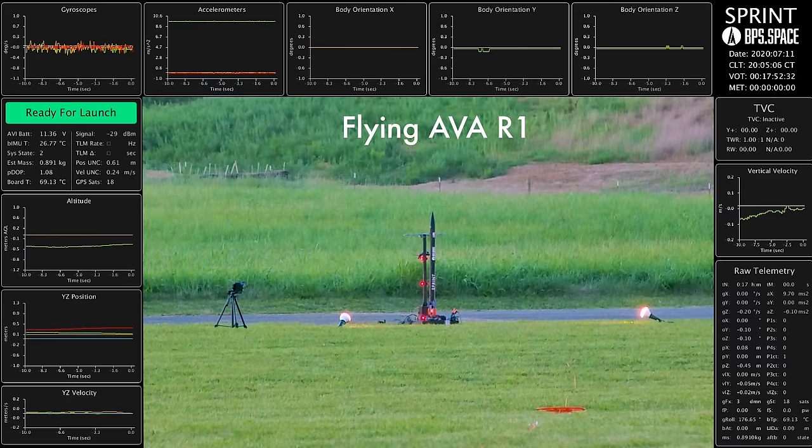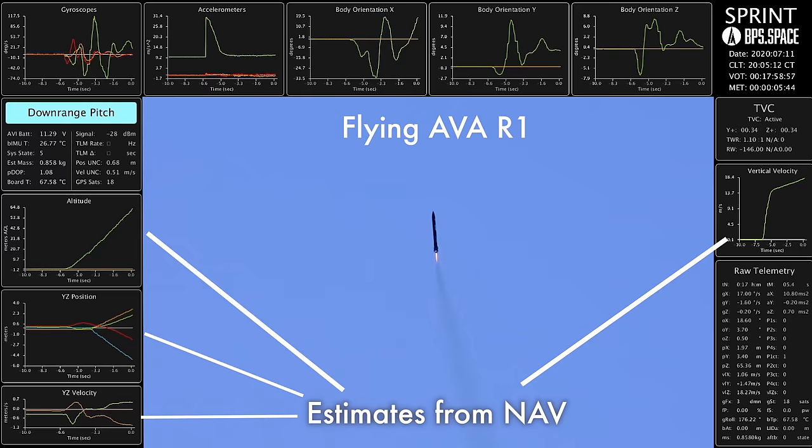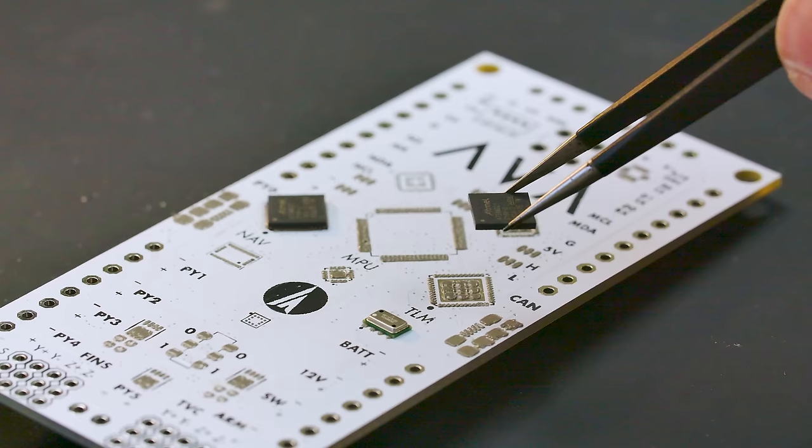This processes all of the data from the inertial measurement unit, GPS, barometer, and any other sensors I might connect. It uses all those to come up with an estimate of where the vehicle is, how fast it's moving, where it's pointing, all of those things.